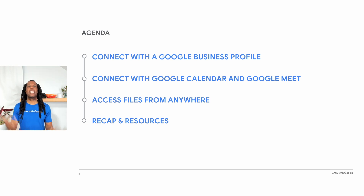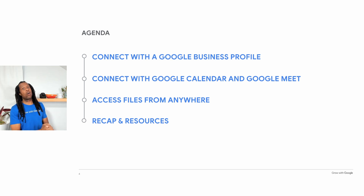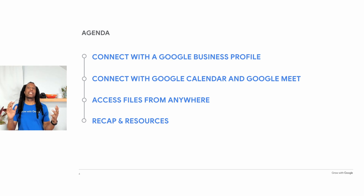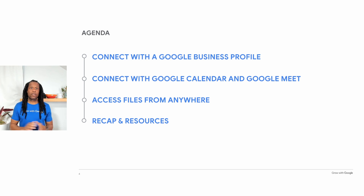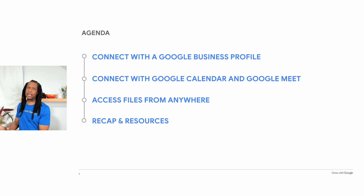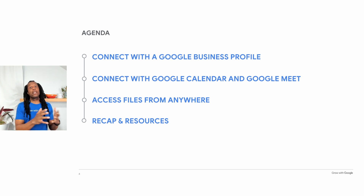We will end with some suggestions for your next steps and additional resources. This workshop will focus on what Google calls the consumer version of the tools. They can be accessed from what you probably call your regular or personal Gmail account, and they're available at no cost. There's also a business version of these tools called Google Workspace. There are a few features mentioned today that are available only in Google Workspace — I will point them out when we get there.